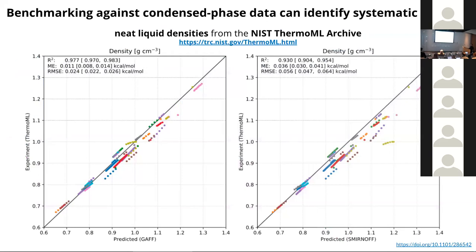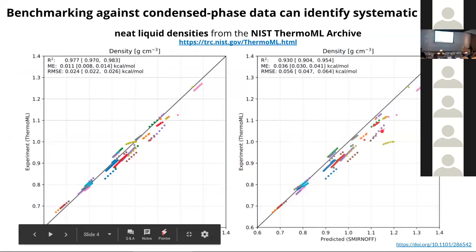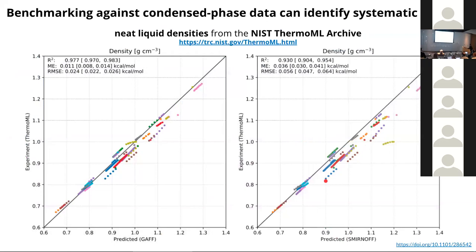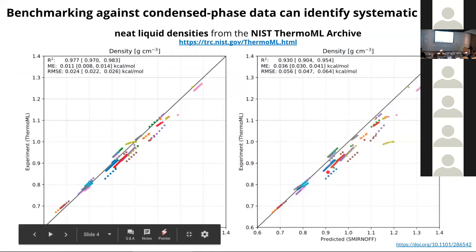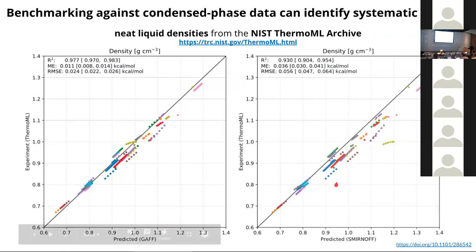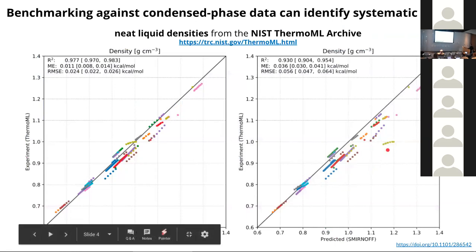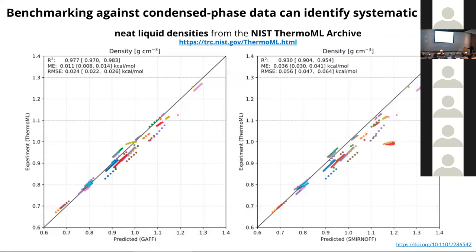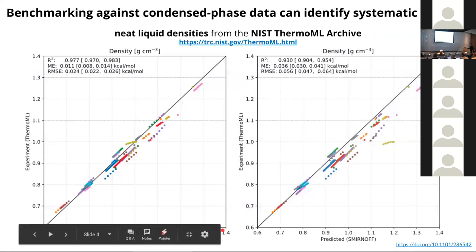We found that benchmarking against condensed phase data can identify systematic issues. There are some systematic issues with certain liquids being displaced in densities, and these are things we can look into — whether there might be systematic parameter issues or other data sources we can use to improve things. This was just the Smirnoff99Frosst unoptimized parameter set. There's also the issue of water being a clear outlier that deserves some attention.